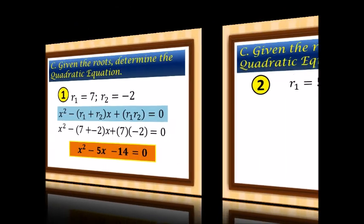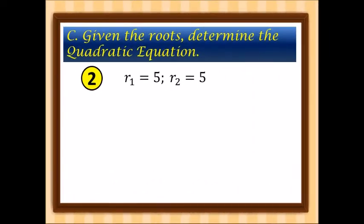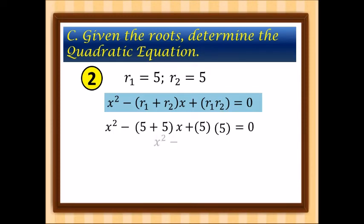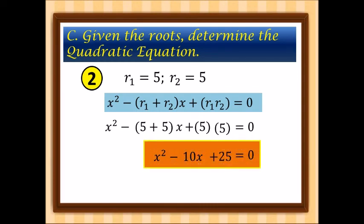Second example with roots 5 and 5: sum is 5 plus 5 equals 10, product is 5 times 5 equals 25. Substituting: x squared minus 10x plus 25 is equal to 0. Therefore, the quadratic equation is x squared minus 10x plus 25 is equal to 0.